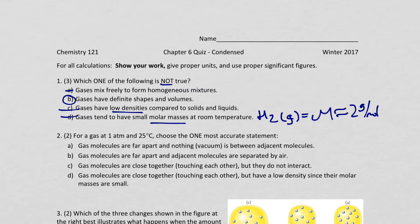Number two, for gas at 1 atm and 25 degrees Celsius, choose the one most accurate statement. A, gas molecules are far apart, and nothing, a vacuum, is in between adjacent molecules. Actually, we went over that in class this past period. Just in going through the answers, I would pick A to start with. However, we can read the rest of them, but to save your time, that is totally the correct answer.